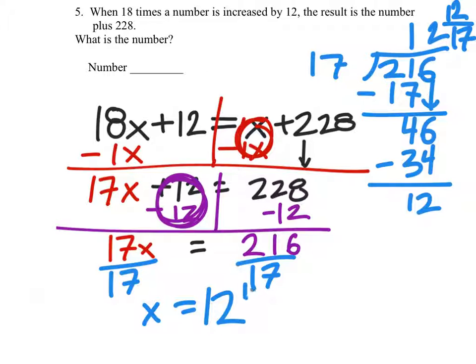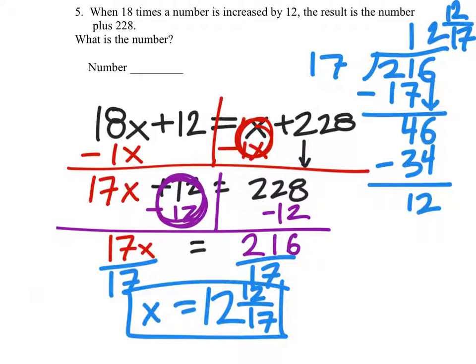12 and 12 17ths. So we have this 12 remaining there. 17 doesn't go into 12 evenly. And since we don't really care about decimals yet, we can just make that a mixed number right there.